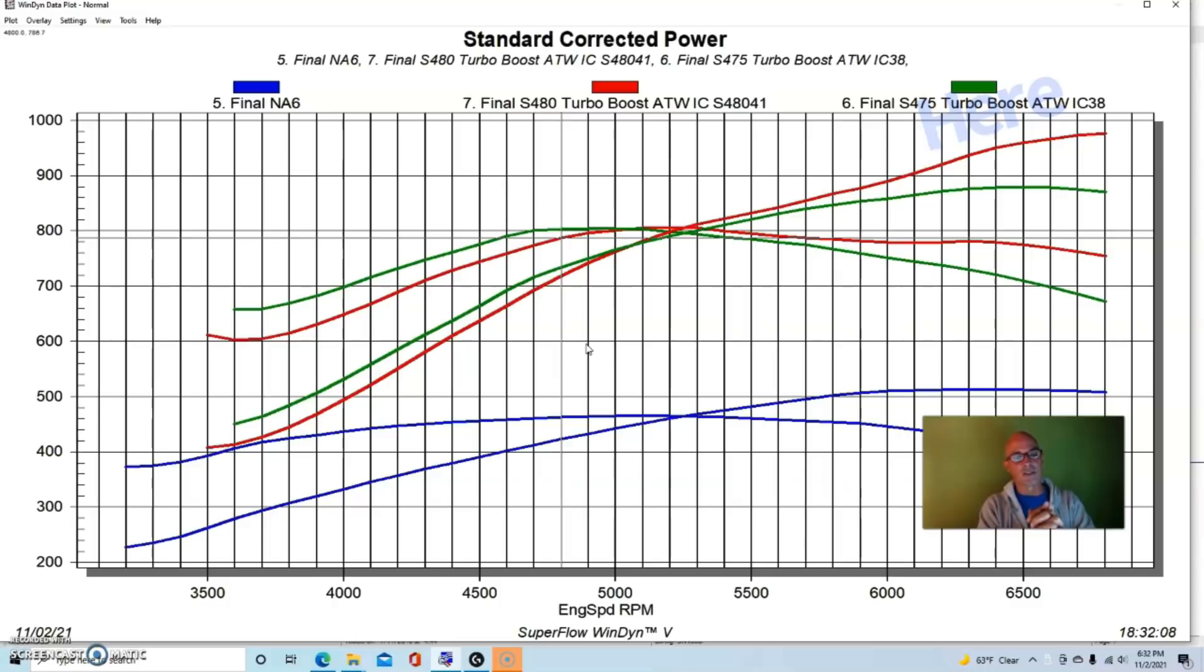The interesting thing is that this was with a manual wastegate controller so I made no adjustments to the manual wastegate controller. But what happened just changing the turbo with no other changes to the controller or the wastegates or anything, this thing with the S480 made more power on the top. You can go through, there's a whole video up here if you want to take a look at all the boost pressure and back pressure and the whole discussion on that.